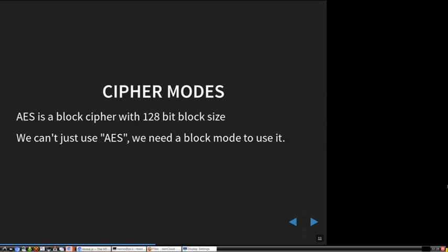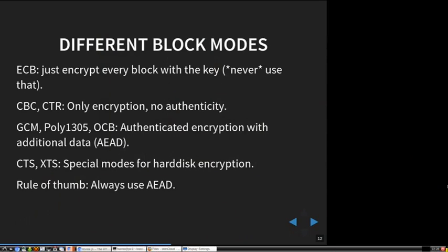AES is a block cipher. That means you have a block — which for AES is 128 bits — and you only encrypt the block. The algorithm itself can't encrypt arbitrary-length text; you can only encrypt the block. So if you want to use AES in practice, you need some kind of mode to use this block cipher for longer inputs.